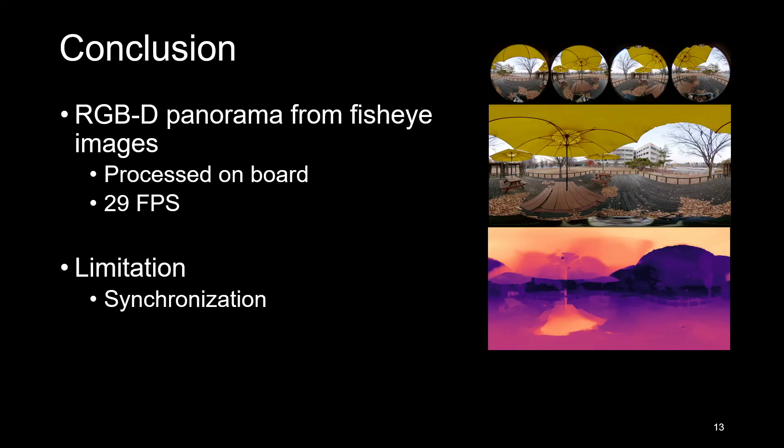Our approach is able to estimate RGB-D panoramas directly from fisheye images, achieving 29 FPS on low-power hardware. As our study focuses on the algorithmic components, some hardware considerations have been left aside. For example, hardware synchronization and global shutter sensors could improve accuracy when fast motion occurs. Thank you for your attention.